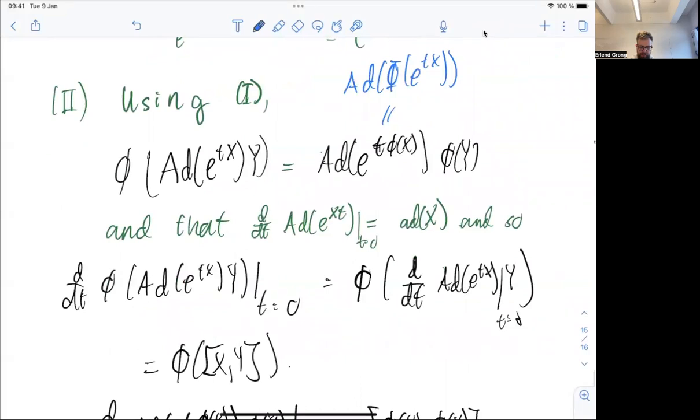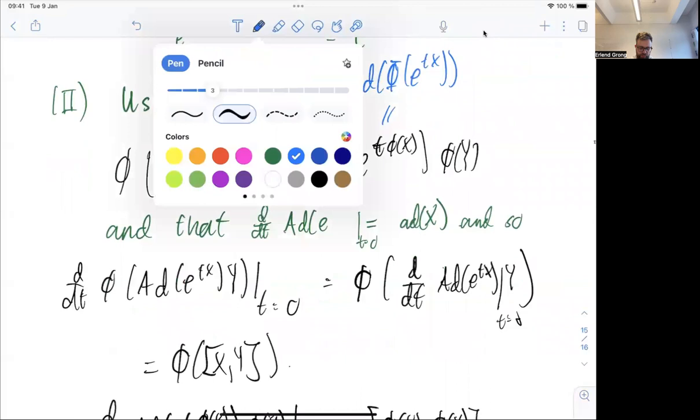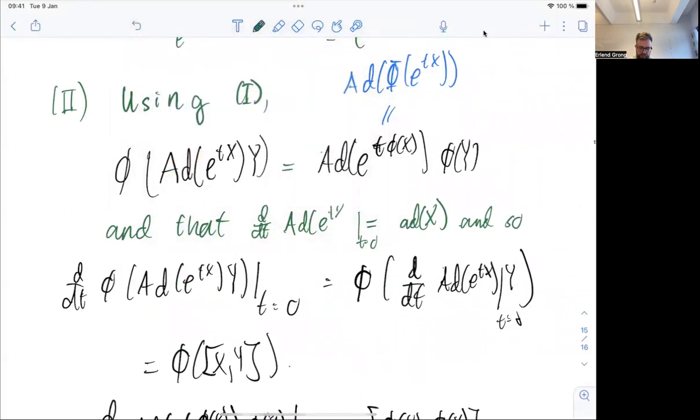And like here, then I'm using the property of derivative. If I take this ad map, we've seen this before, and this is the way to produce the exponential, to produce the bracket if we take, yeah, T should probably be on the other side here.